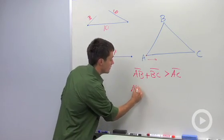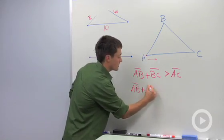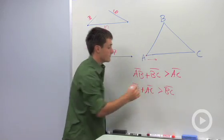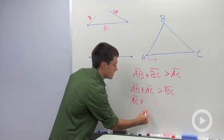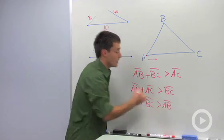We could start with AB and go with our side AC and say AC has to be greater than your third side, which is BC. And last, you could write your last inequality, which would say side AC plus side BC has to be greater than your side AB.